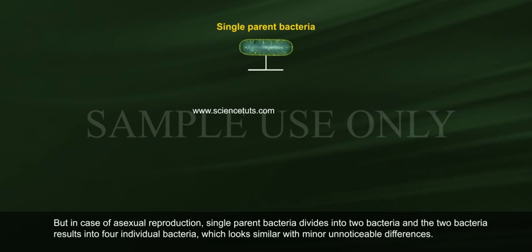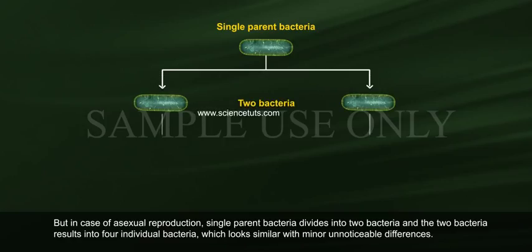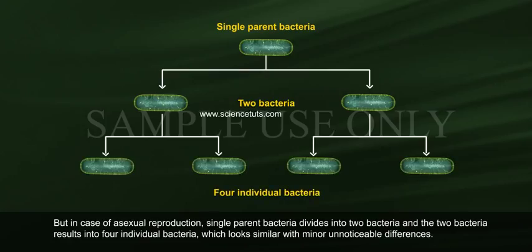But in the case of asexual reproduction, a single parent bacterium divides into two bacteria, and those two result in four individual bacteria, which look similar with only minor, unnoticeable differences.